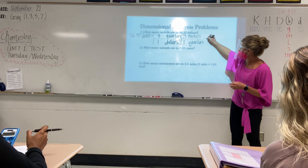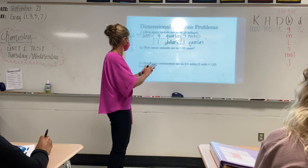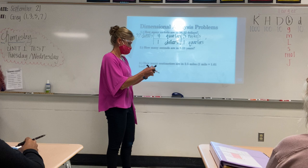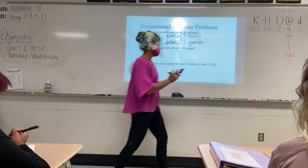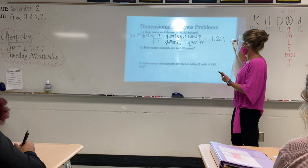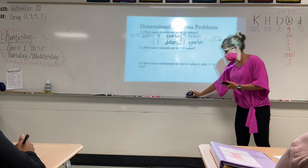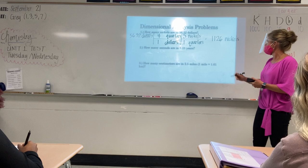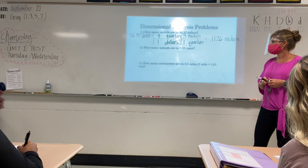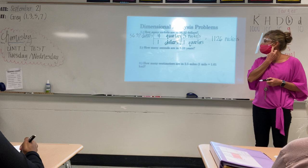Now we multiply across the top: 56.32 times 4 times 5 — that gives us 1,126.4. If we're rounding to make sense, since we're talking about nickels, you would just chop off that point four and round down. That's four sig figs too.